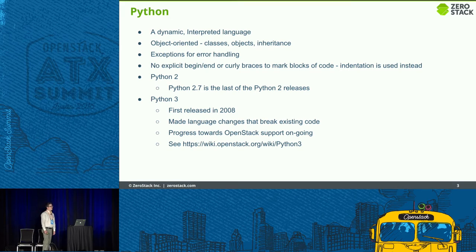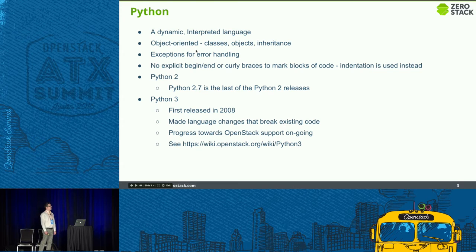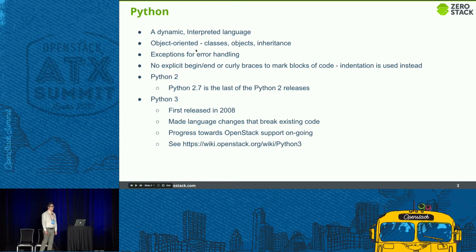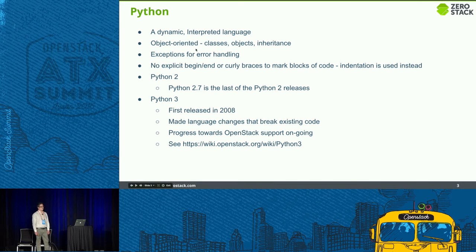Python is a dynamic interpreted language. There is a bytecode intermediary format — PYC files — which you're probably familiar with. But for all intents and purposes, it's an interpreted language. It's object-oriented, so applications are typically written with classes. It doesn't have to be, but any large application uses inheritance so that you can reuse common code for different types. Exceptions are used for error handling. And one thing that people unfamiliar with Python find strange is that there are no curly braces — indentation is used to mark control blocks like while loops or for loops.